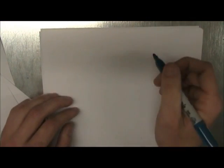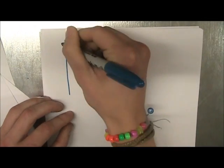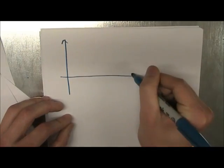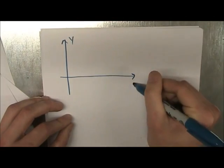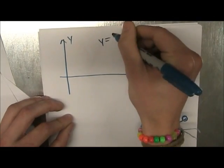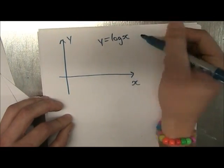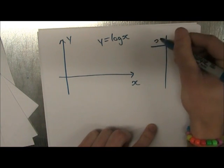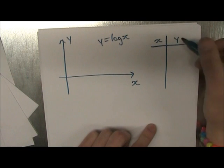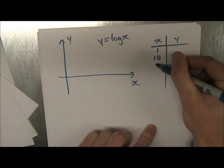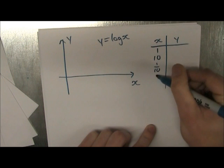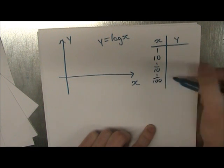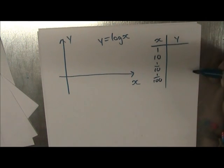So now that we went over that, I want to graph y is equal to log of x in the xy plane. So we're gonna make a chart of x and y points. And I want to do x is equal to 1, 10, 1 tenth, 1 one hundredth.